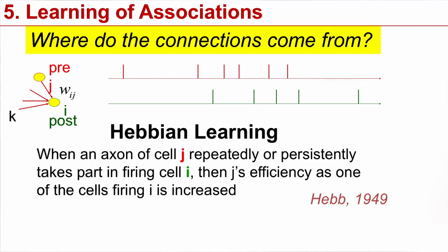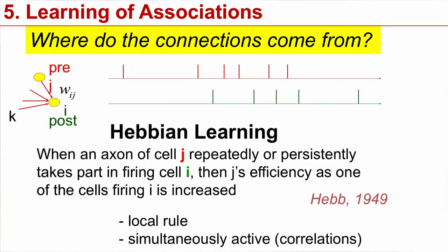So basically this rule says, if I have a neuron J, and if this neuron J is connected to another neuron I, then the connection between J and I can change, and it can change based on joint activity.